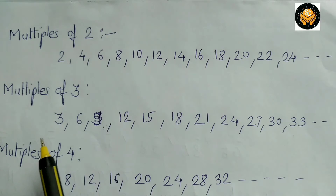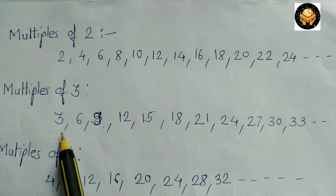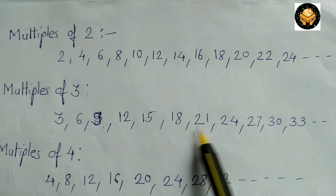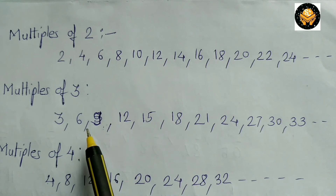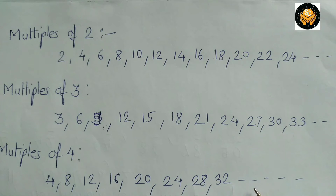Similarly, the numbers in the 3 times table are the multiples of 3: 3, 6, 9, 12, 15, 18 and so on. The numbers in the 4 times table are the multiples of 4: 4, 8, 12, 16, 20, 24, 28, 32 and so on.